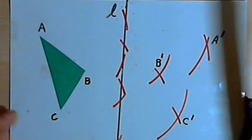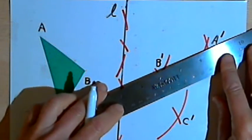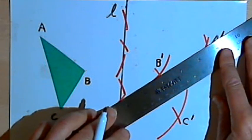And now all I've got to do is connect points A prime, B prime, and C prime, and I'll have my reflected image.